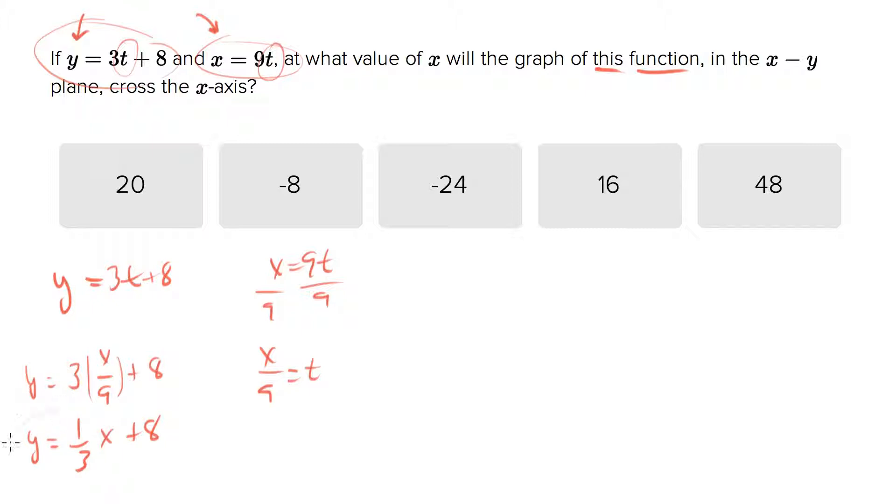As a bonus, we now have a function with just y and x, which should make you feel more comfortable. It's in point-slope form, which is useful because the question asks: at what value of x will the graph of this function in the x-y plane cross the x-axis? So we're talking about a line.